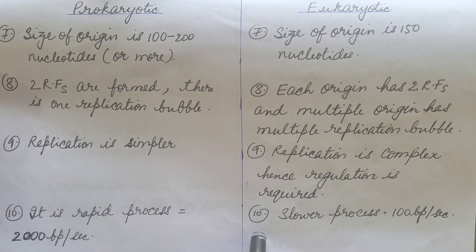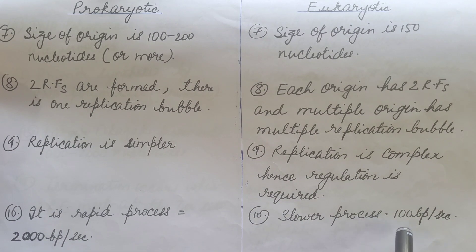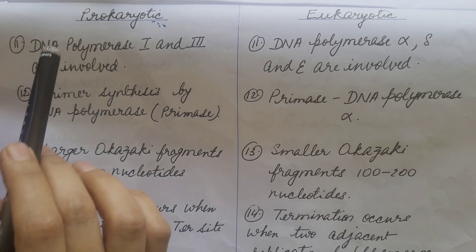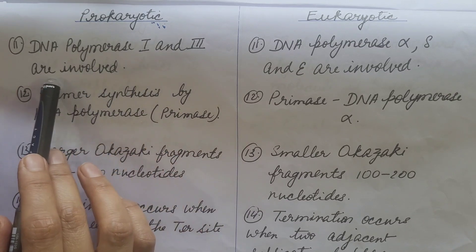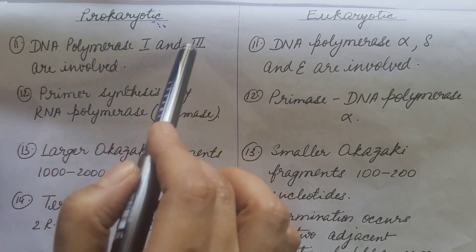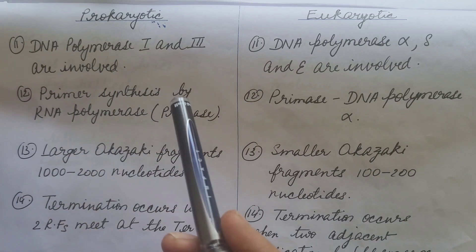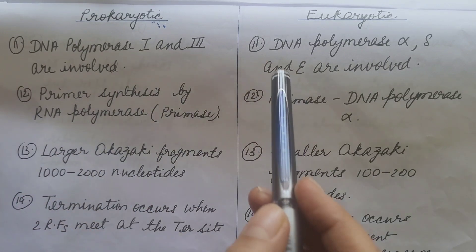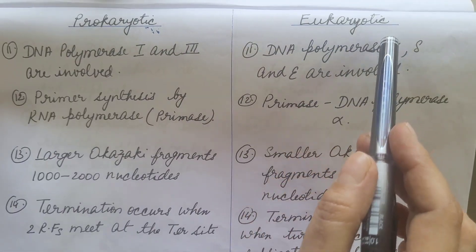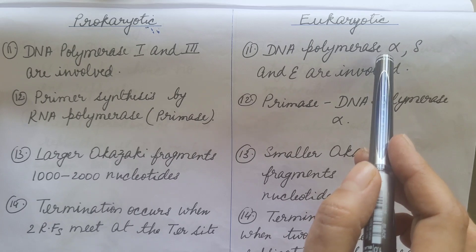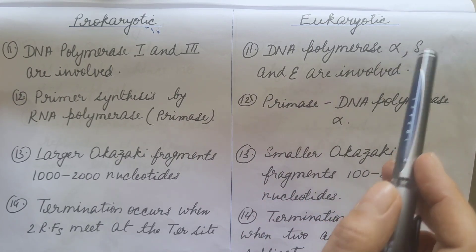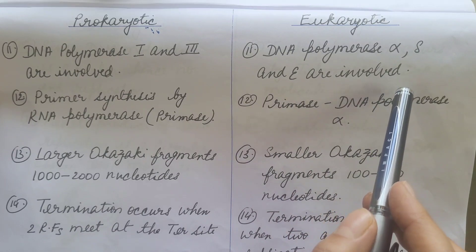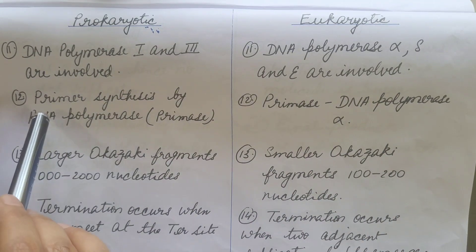In prokaryotic DNA replication, DNA polymerase I and III are involved; DNA polymerase III is the major replicative enzyme, as we have already discussed. In eukaryotic DNA replication, DNA polymerase alpha, delta, and epsilon are involved, and DNA polymerase delta and epsilon are the major replicative enzymes.